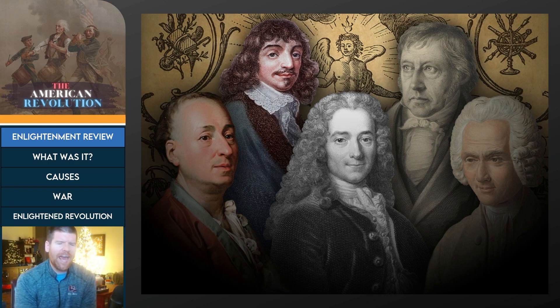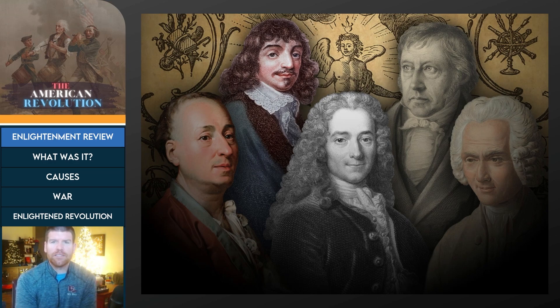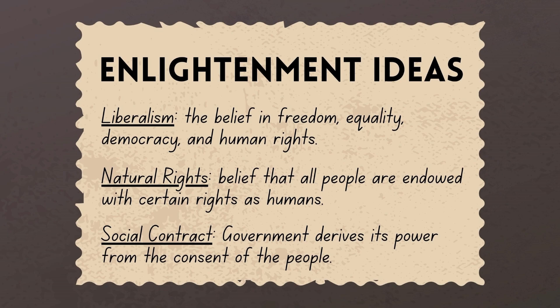The main actors that we see in the Enlightenment are the Philosophes. The Philosophes themselves are these intellectuals who take ideas from the Renaissance and the Scientific Revolution and apply them to human problems. The biggest ideas we really need to understand as we move into the American Revolution are liberalism, natural rights, and the social contract. Liberalism is a fundamental belief that freedom, equality, democracy, and human rights are an inalienable part of what it is to be a person in a political society.